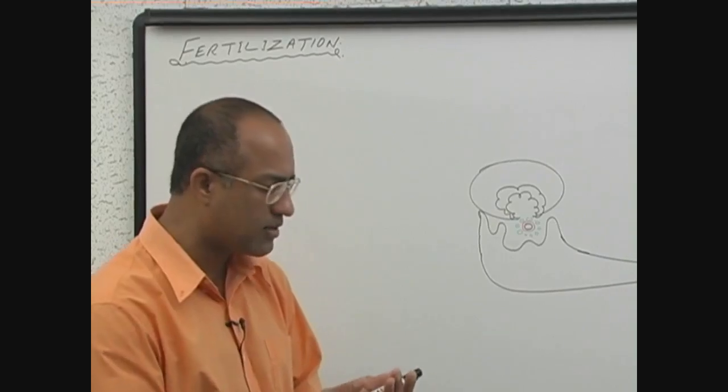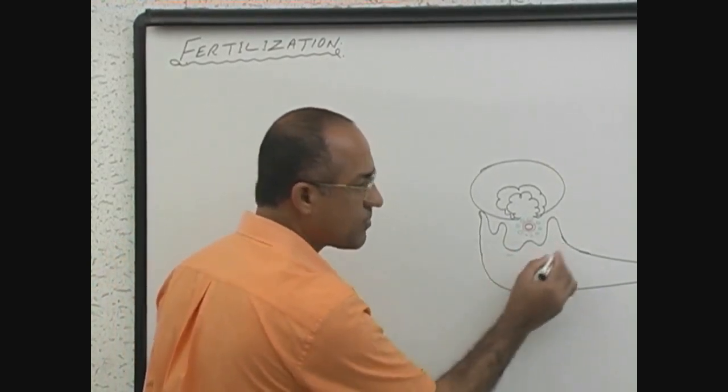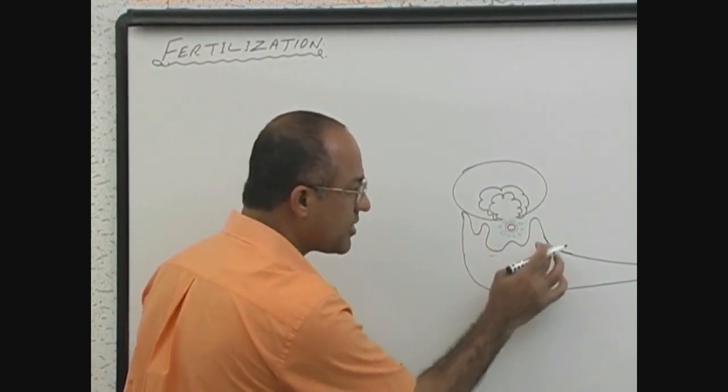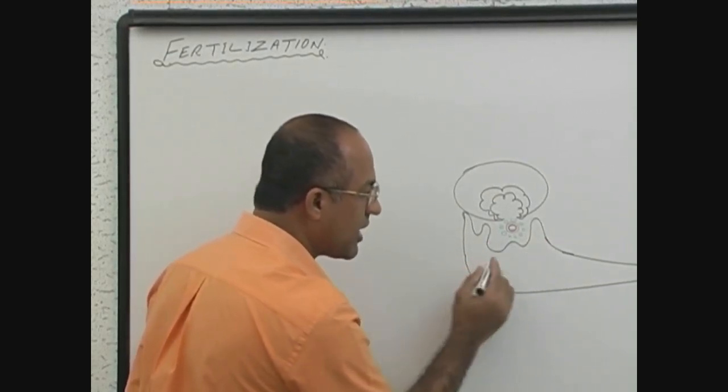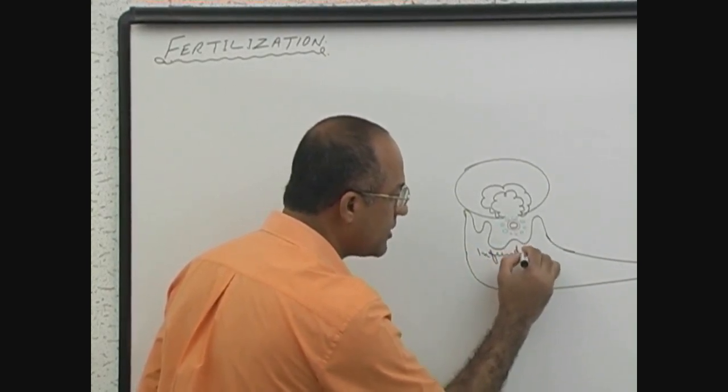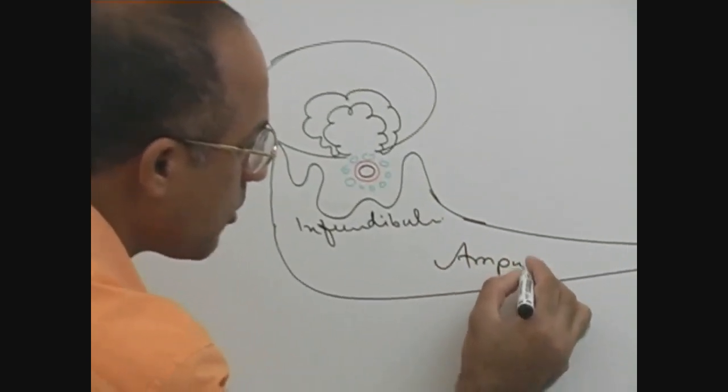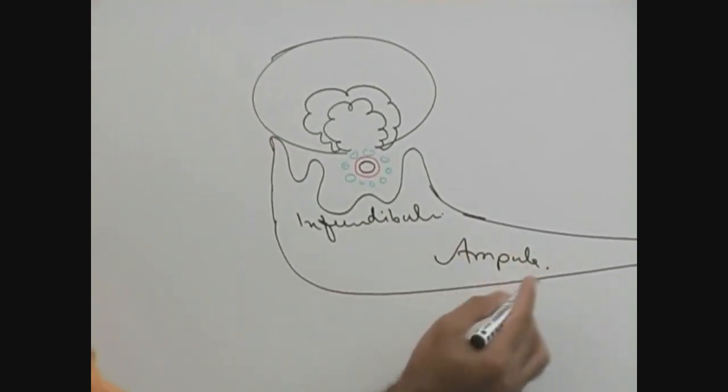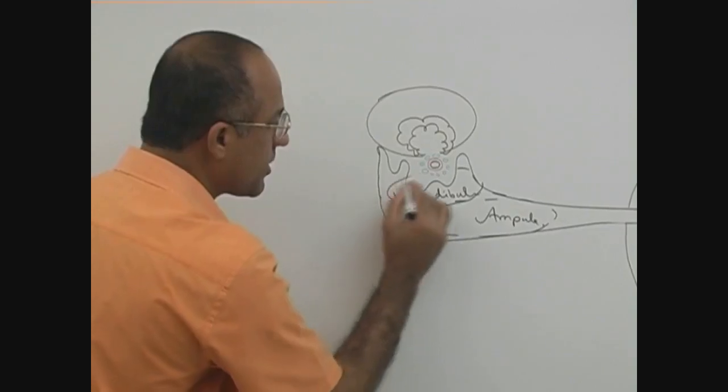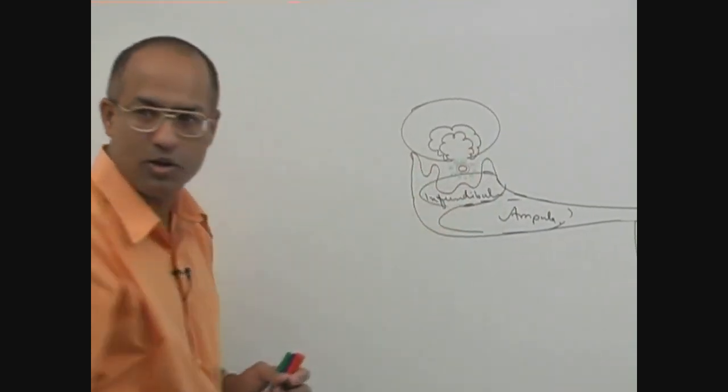What are the different parts of fallopian tube? What is this part called? What is this part? No, these processes are called fimbriae. But this part, it is not called ampulla. The first part is infundibulum. Infundibulum. Then here is ampulla. Ampulla is the widest and the longest part. But earliest part, this one, is infundibulum. And infundibulum is catching the ovum.